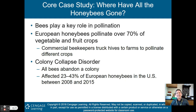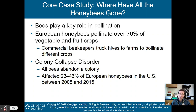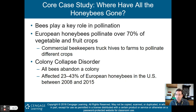Bees play a key role in pollination. European honeybees pollinate over 70 percent of the vegetable and fruit crops out there. Commercial beekeepers truck hives to farms to pollinate different crops. The instructor from my beekeeping course at Cornell actually brought his hives out to farms to help pollinate crops.